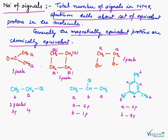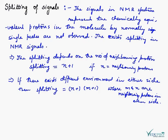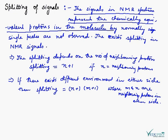So with NMR signals, we can determine the total number of protons. In NMR spectroscopy, we can see that the signals in the NMR spectrum represent the chemically equivalent protons available in the molecules. Normally, single peaks are not observed in the NMR spectrum — these peaks are split.